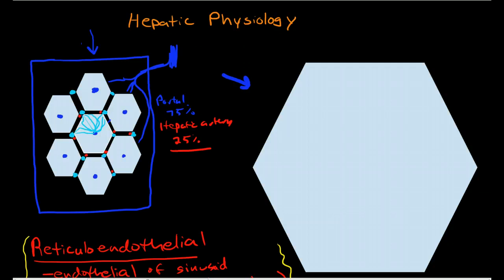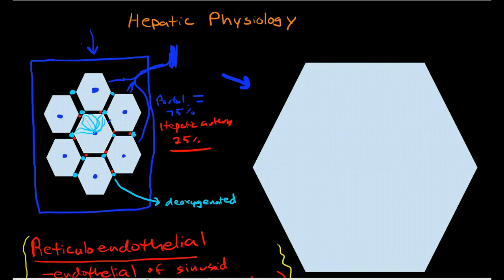And this is important because the portal vein has already gone through a capillary bed. So this blood in the portal vein is pretty well deoxygenated. And the liver is doing a lot of things that require oxygen.